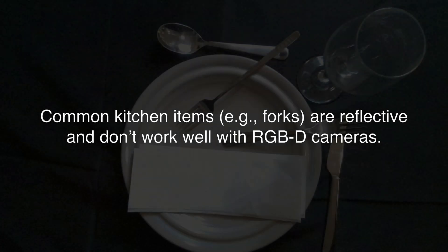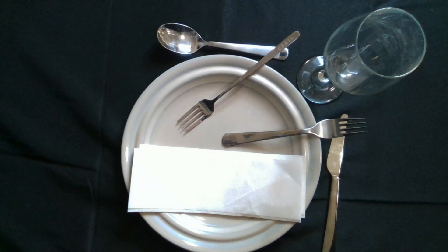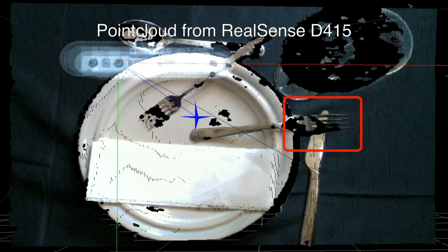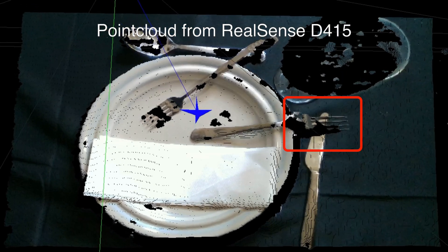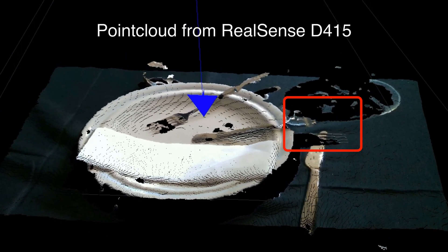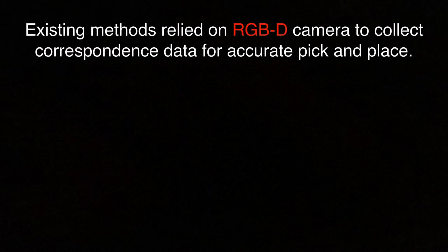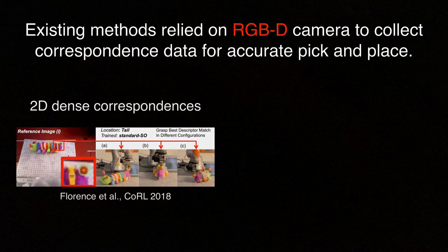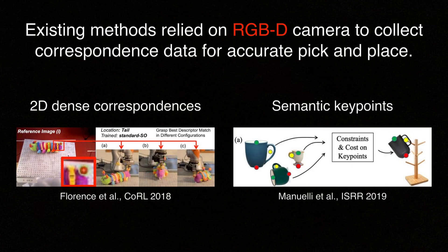This task is challenging because common kitchen items like forks are reflective and don't work well with RGBD cameras. For the dining table scene, the RGBD camera perceives incorrect geometry of forks, as highlighted in the red box. This poses difficulties for state-of-the-art pick-and-place methods because they rely on RGBD cameras to collect correspondence data that is then used to train the perception model.